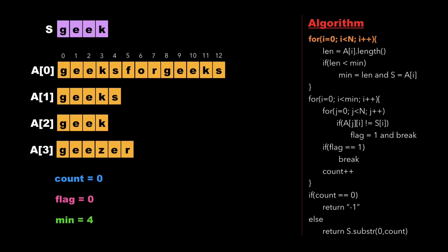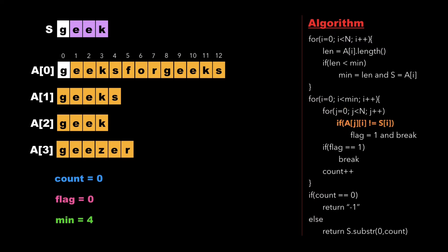Finally we have the minimum string as 'geek' whose size is four, so we exit the first for loop. We run another for loop from i equals zero to min, traversing all characters of string s, with a nested for loop from j equals zero to n to traverse all strings of array a. At each traversal we check whether a[j][i] is not equal to s[i].